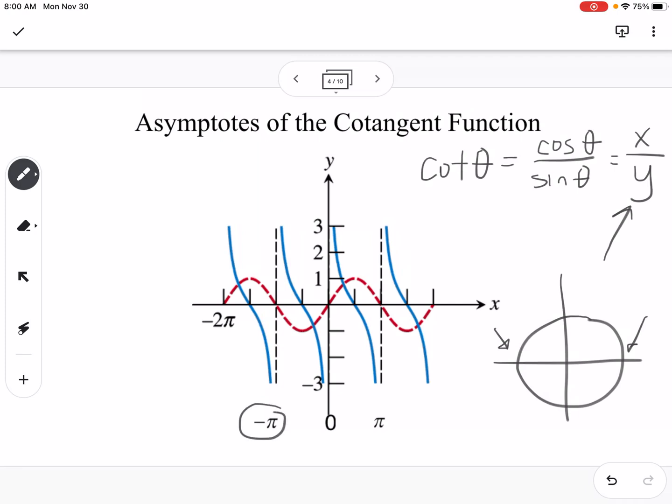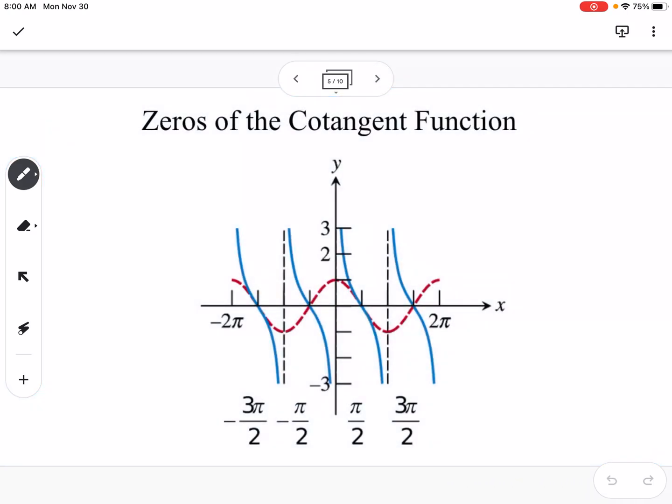You can see negative pi, and pi, and 0 pi, those are our asymptotes on this graph right here.